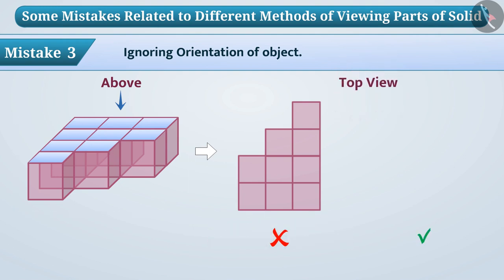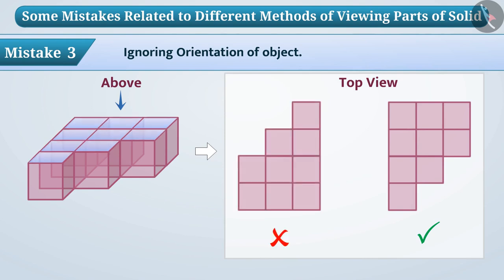The top view of the shape shown is correct in this way and not in this way. Here is the top view of the shape shown. It should have three squares up and one square down.